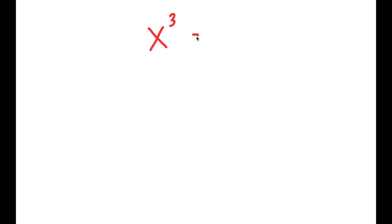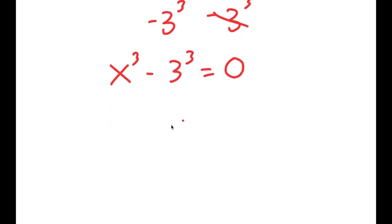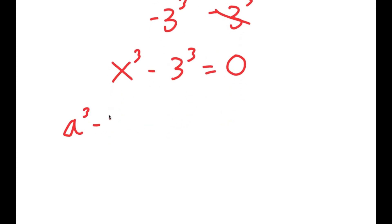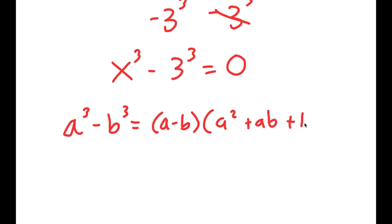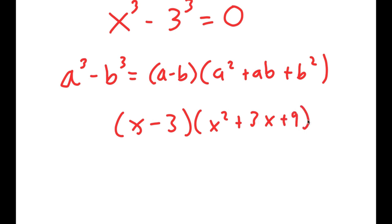All right, so in this video I'm solving the equation x to the power of 3 is equal to 3 to the power of 3. So to solve this, I'm going to first start by subtracting 3 to the power of 3 on both sides, so now I get x to the power of 3 minus 3 to the power of 3 is equal to 0. Now if I have something in the form a cubed minus b cubed, this is equal to a minus b times a squared plus ab plus b squared. So this turns into x minus 3 times x squared plus 3x plus 9 is equal to 0.